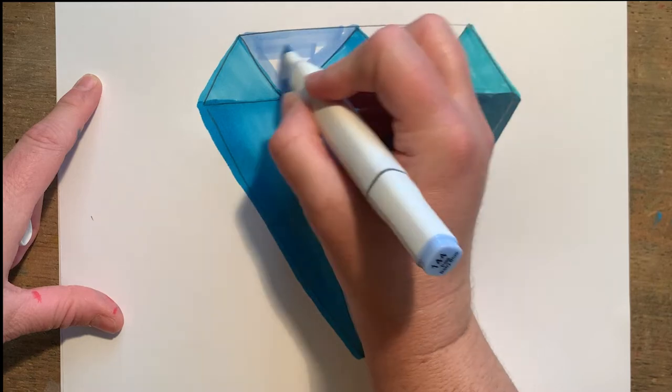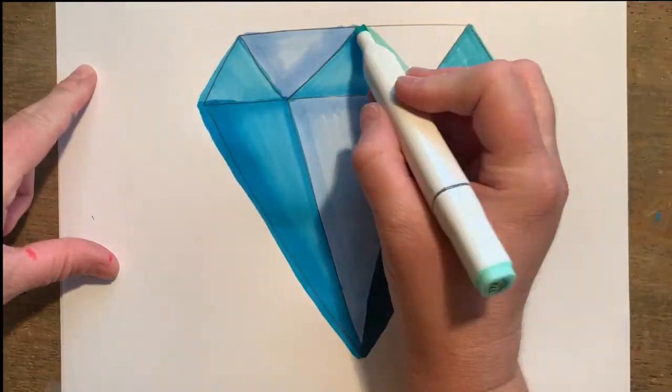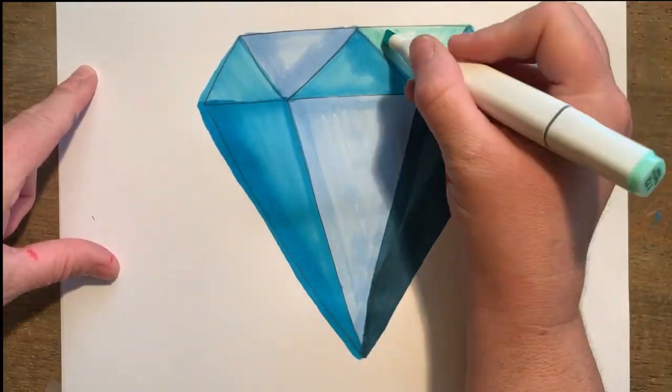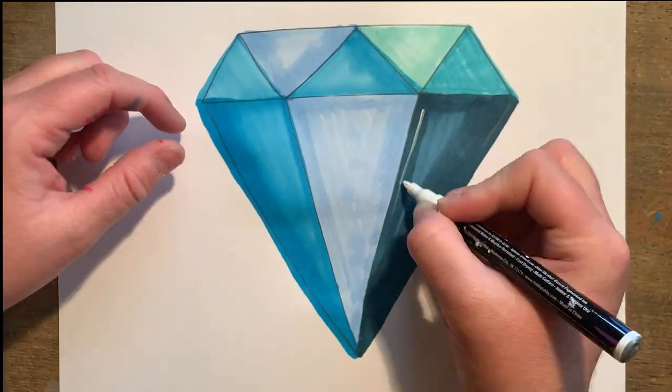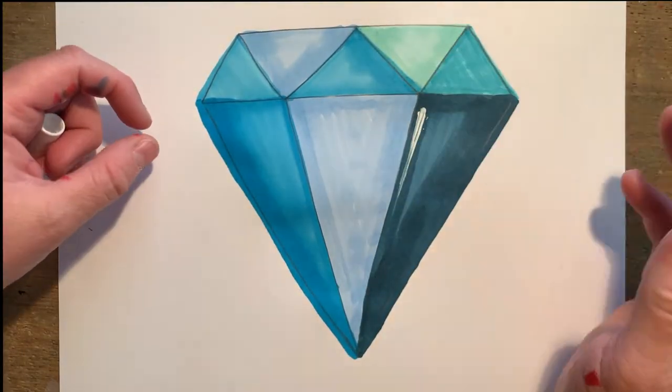By alternating light and dark shades, this creates dimension and makes my diamond look 3D. To add some shine and sparkle, I'm using my white paint pen to add some highlights.